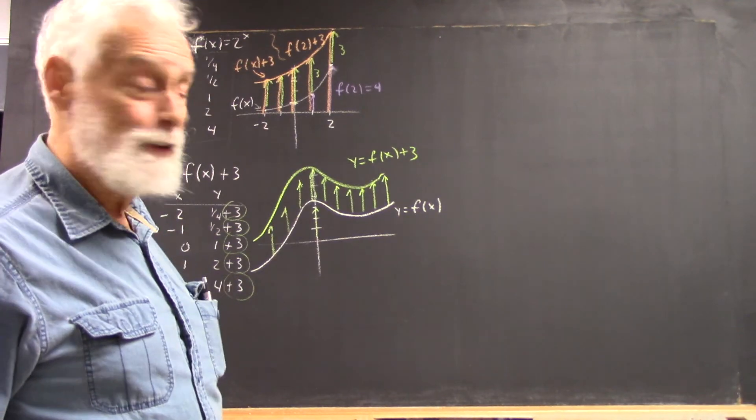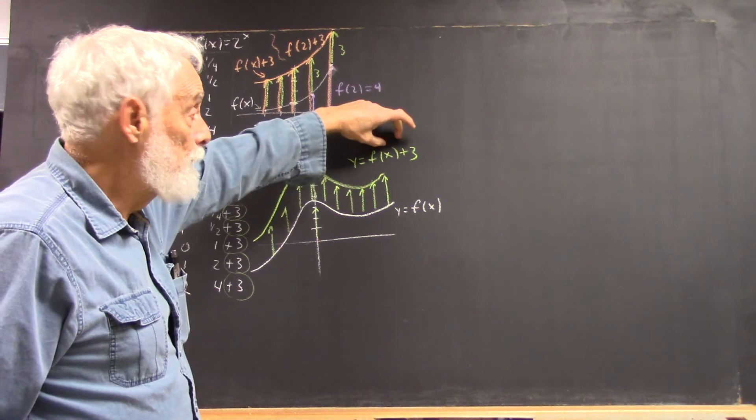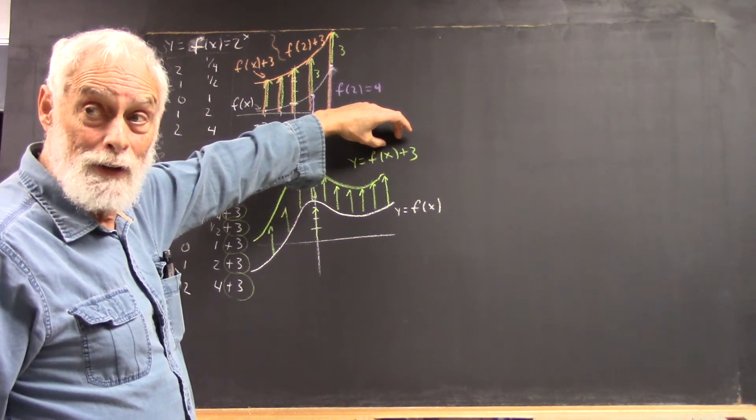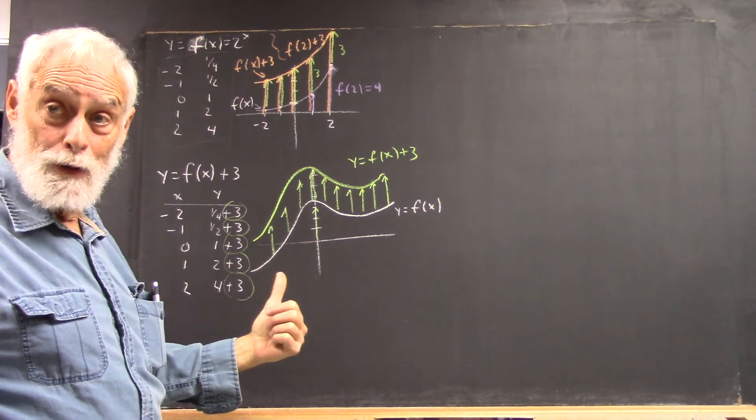Now, as we saw last time, you have other types of transformations. If the x plus 3 was all in parentheses, we saw last time that that would take the graph and shift it 3 units to the left. Okay?